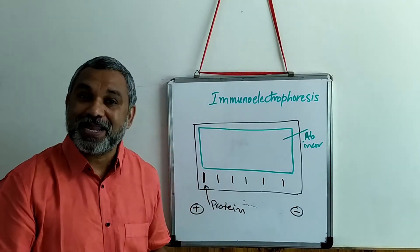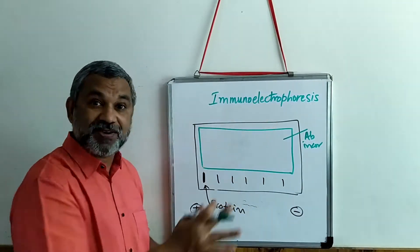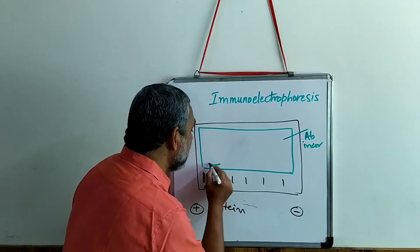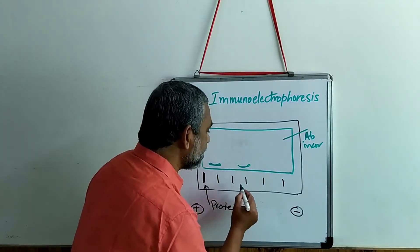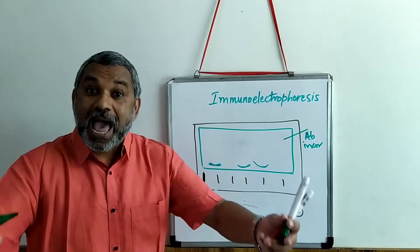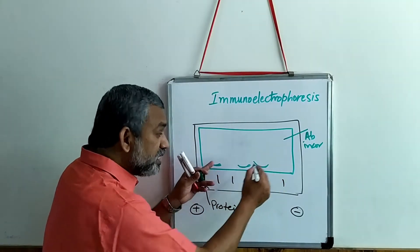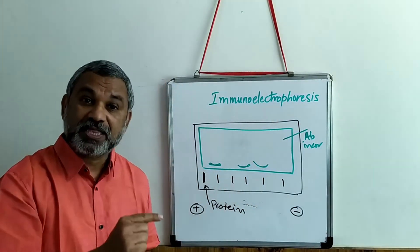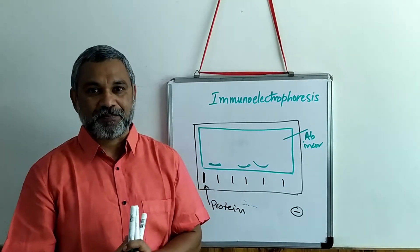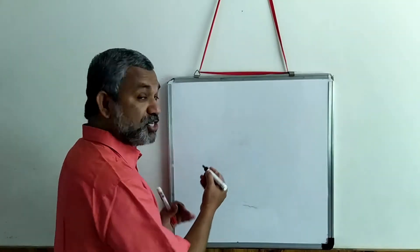The proteins migrate in all directions. The antibody also migrates in all directions, and at the zone of equivalence — wherever the antibody matches the epitopes — you will find an arc. You may find an arc here, an arc here, and maybe no arc somewhere else, if the antibody produced is a polyclonal antibody. This is a mixture of electrophoresis with immunological diffusion, which is why it is called immunoelectrophoresis.